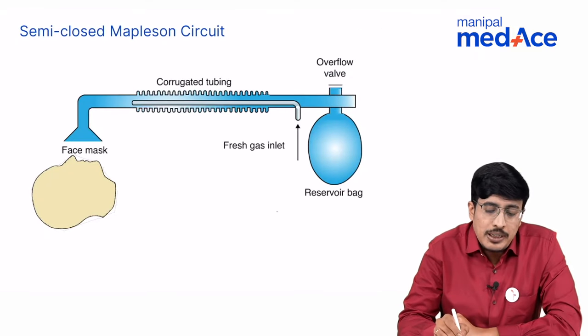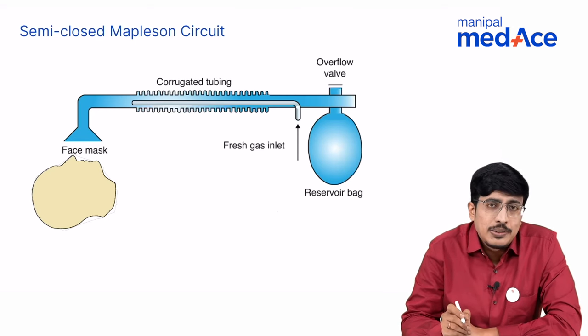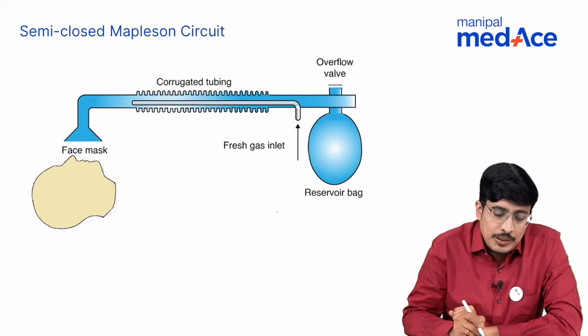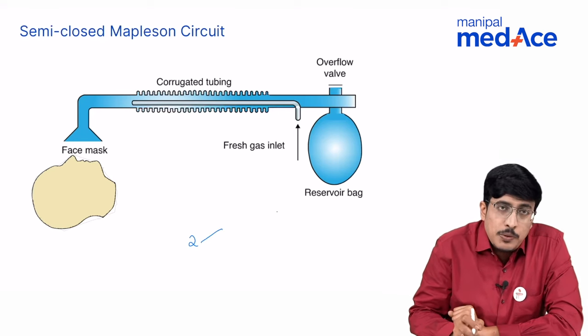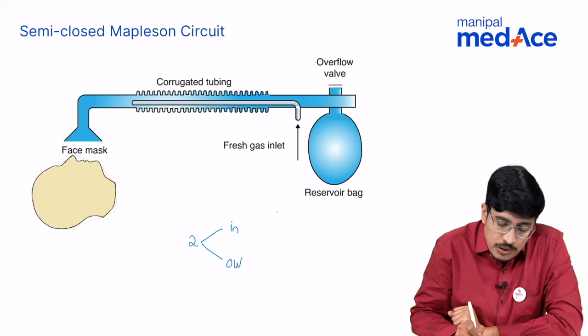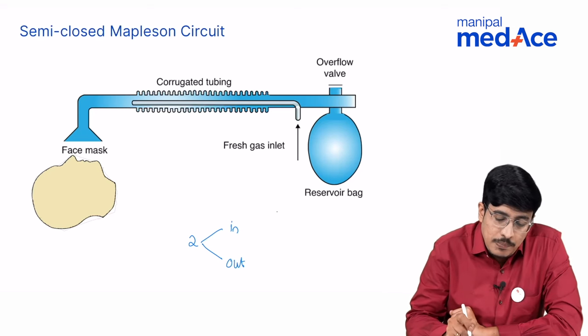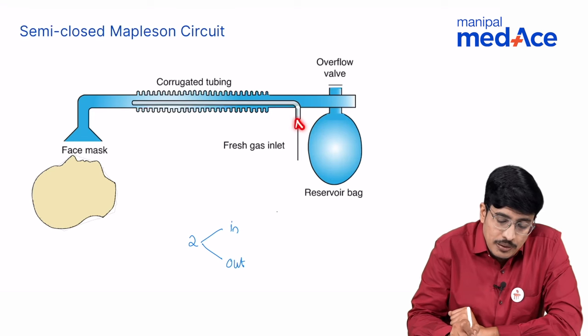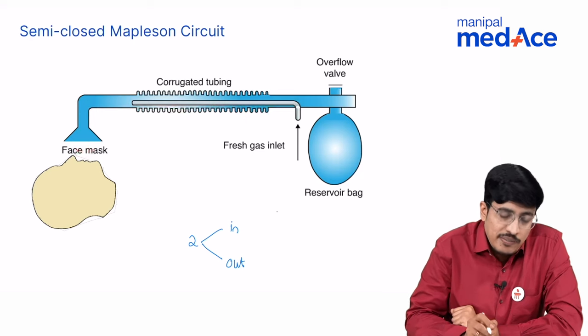Now let us look at Mapleson circuits or the semi-closed circuits. The design of these circuits is basic and they are still in use today. They have two tubings, one of which would bring the gas in, other one would take the gas out. So the fresh gas will enter the fresh gas tubing through this inlet and it would go in and enter the patient through a face mask.